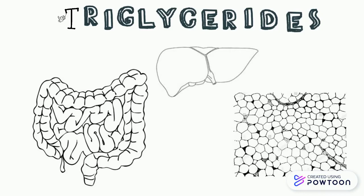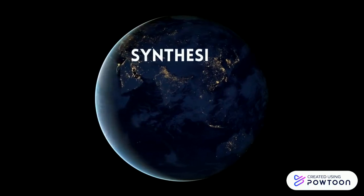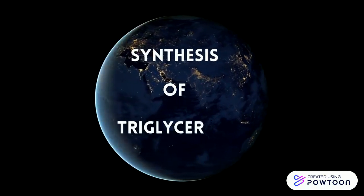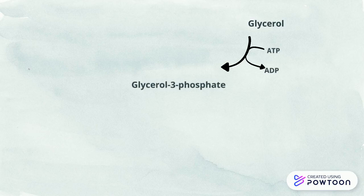Except for the intestine and adipocytes, triglyceride synthesis begins with glycerol-3-phosphate. Glycerol is first phosphorylated by glycerol kinase to form glycerol-3-phosphate.